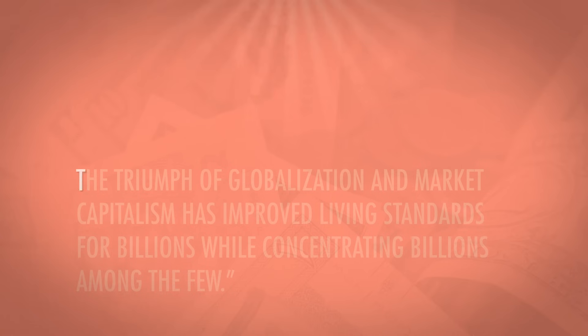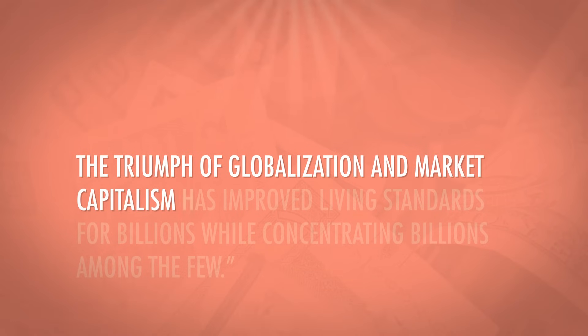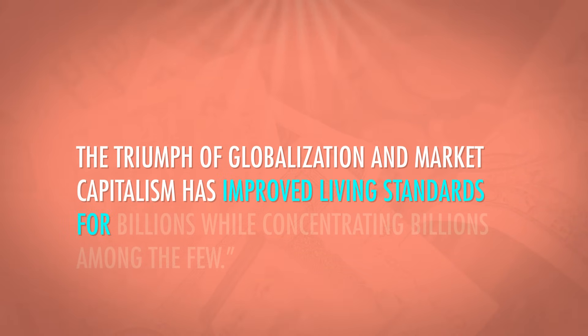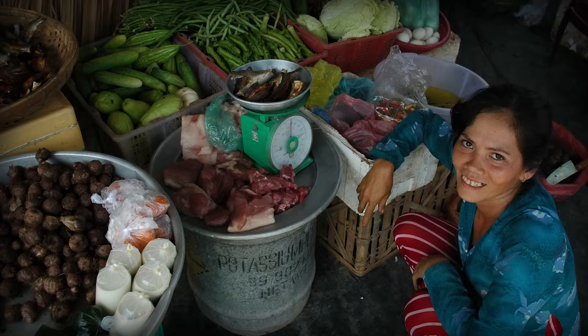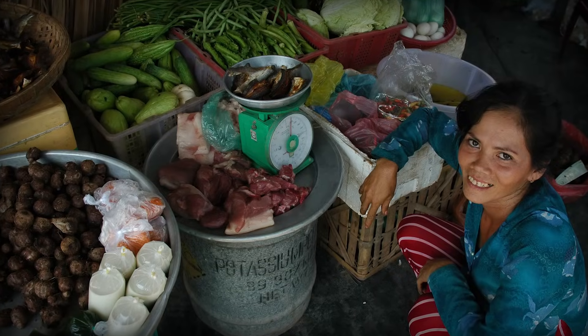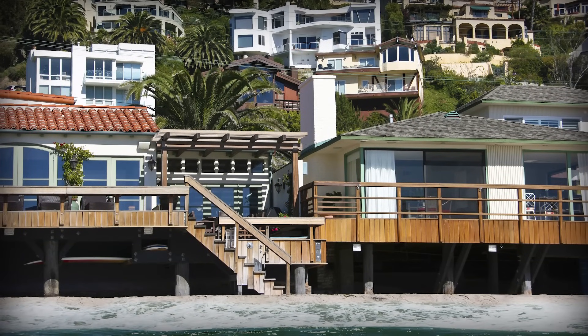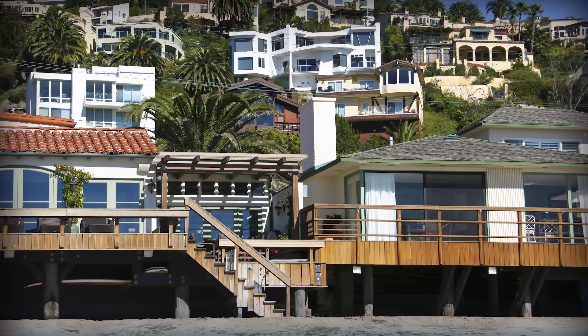Thanks, Thought Bubble. The Industrial Revolution created a lot of inequality between countries, but today globalization and international trade are accelerating it. Most economists agree that globalization has helped the world's poorest people, but it's also helped the rich a lot more. Harvard economist Richard Freeman noted that 'the triumph of globalization and market capitalism has improved living standards for billions, while concentrating billions among the few.' So it's kind of a mixed bag — the very poor are doing a little better, but the very rich are now a lot richer than everybody else.